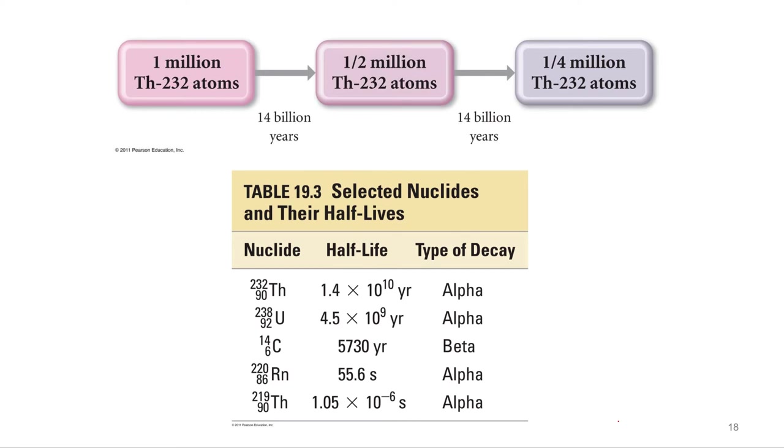Carbon-14, 5,730 years. Radon under a minute. Thorium-219, a microsecond. So that's how unstable that is. So they can vary widely. And as we briefly talked about yesterday, what you use to date materials has to coincide with how old it is.